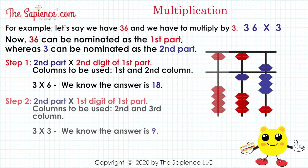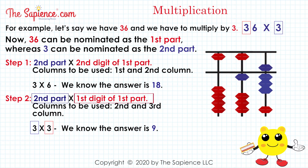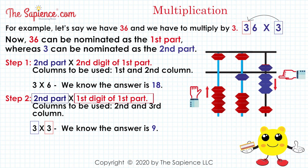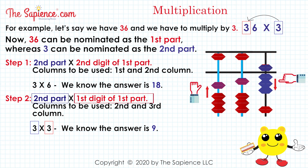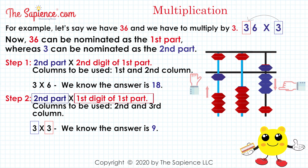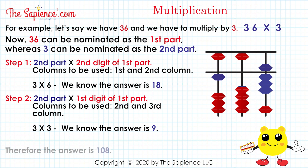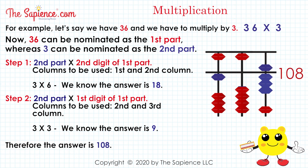Step 2: second part multiplied by first digit of first part. Columns to be used: second and third column. 3 multiplied by 3, we know the answer is 9. Now we will add 9 onto the second and third columns. Therefore the answer is 108.